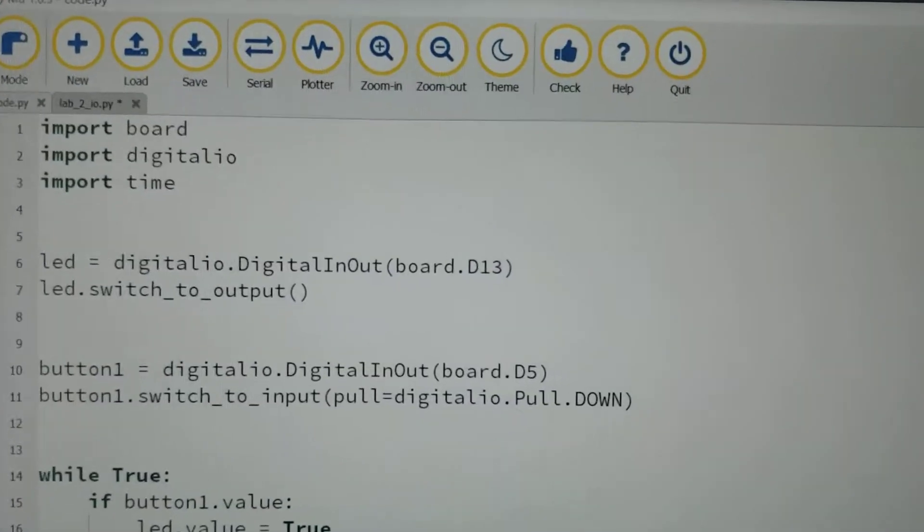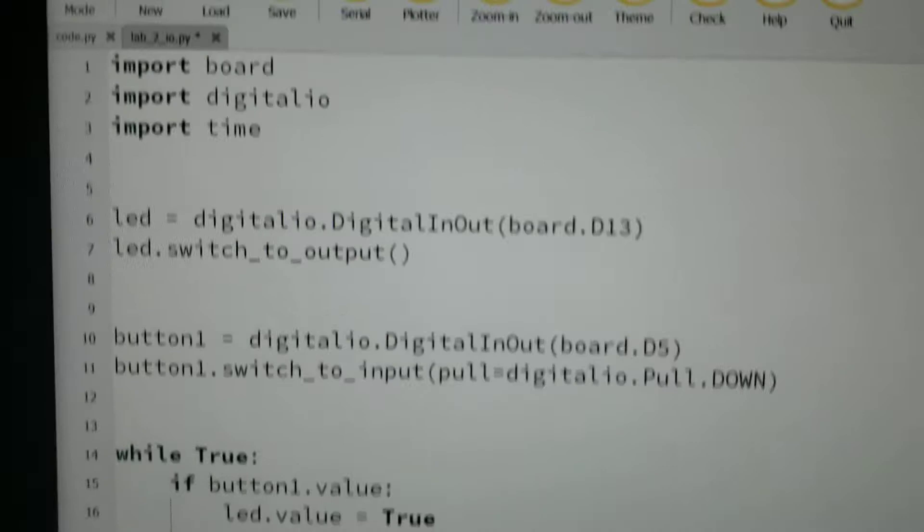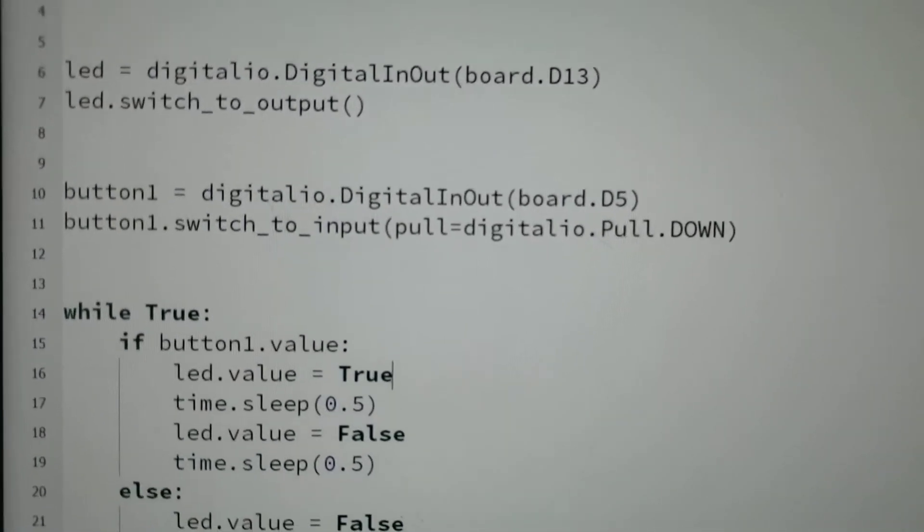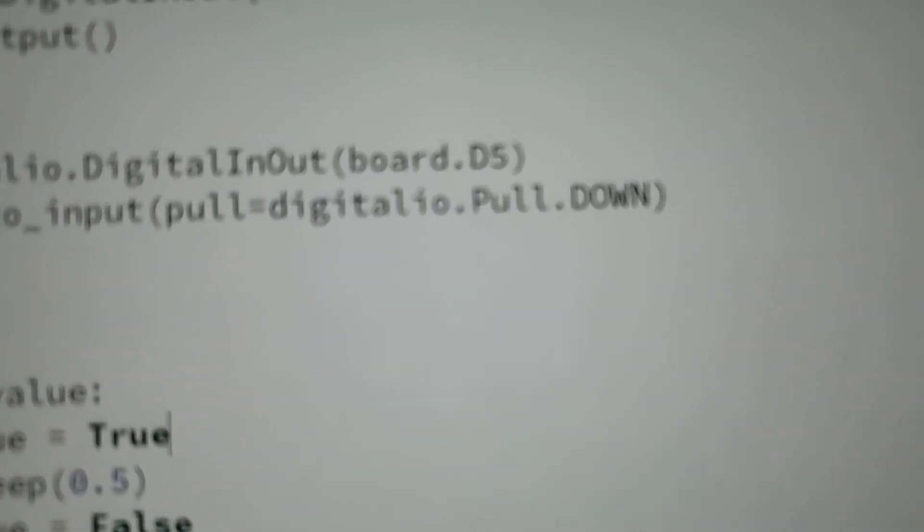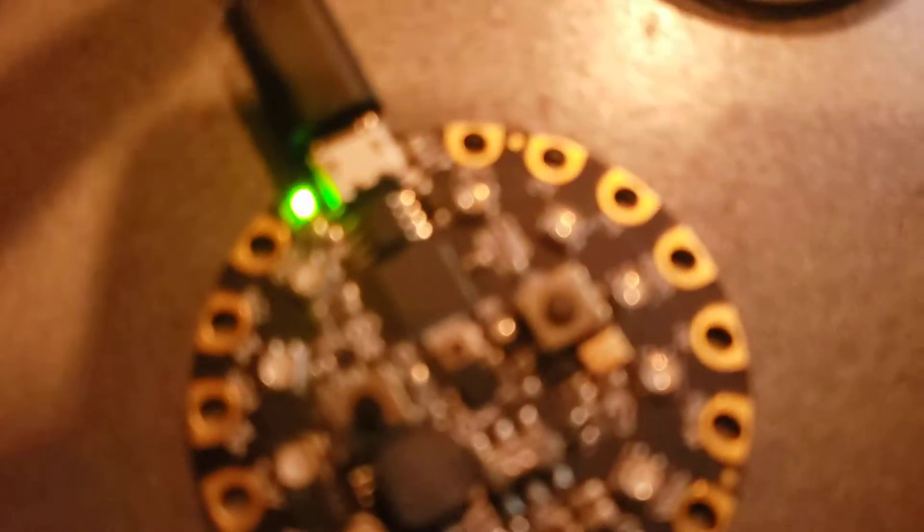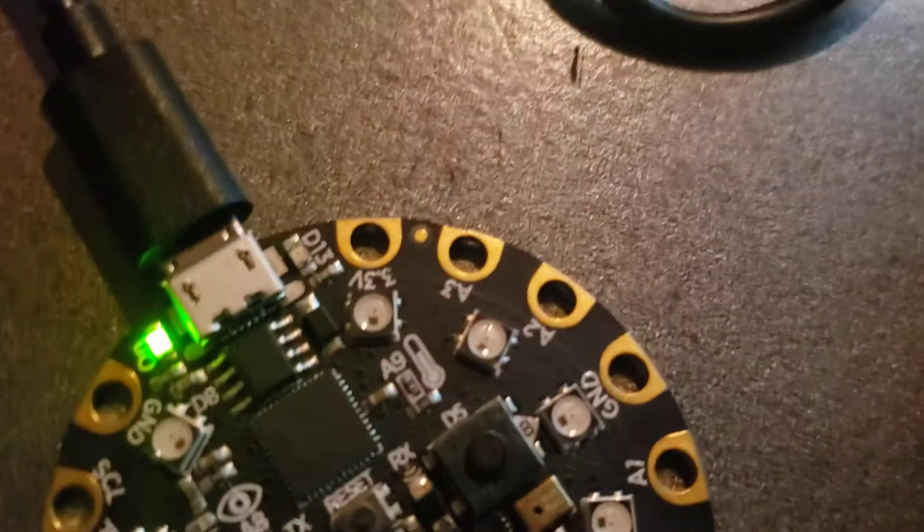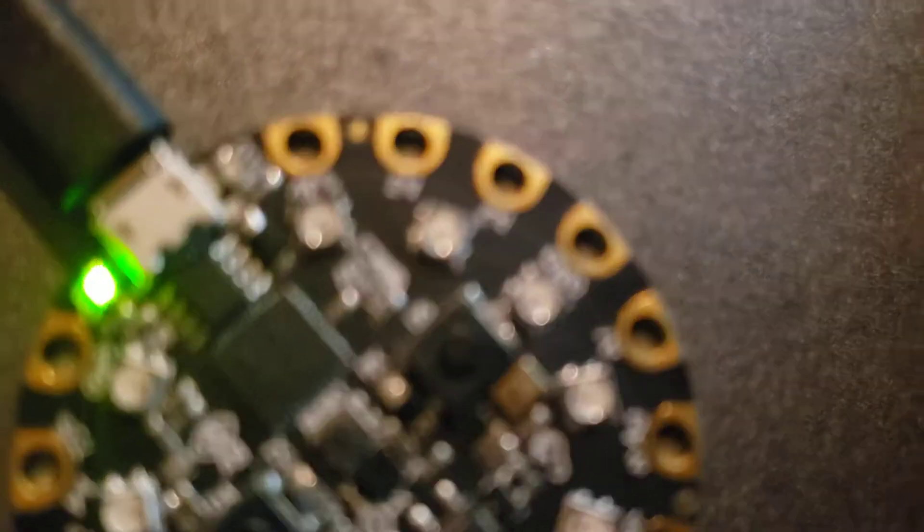And I've got it as, let's refocus here, led.switch_to_output. So it'll be switched as an output. Then I've got a variable name of button1, which is addressed as board.D5, which is this button right here. As you can see, it is labeled as D5.